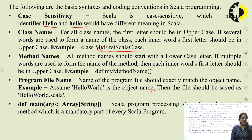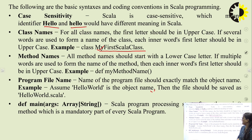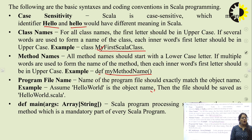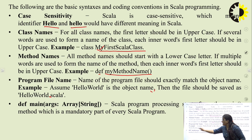Next is method naming. All method names should start with a lowercase letter. If multiple words form the method name, each inner word's first letter should be uppercase — for example: def myMethodName. Next is the program file name. The name of the program file should exactly match the object name. For example, if 'HelloWorld' is the object name, then the file should be saved as HelloWorld.scala.